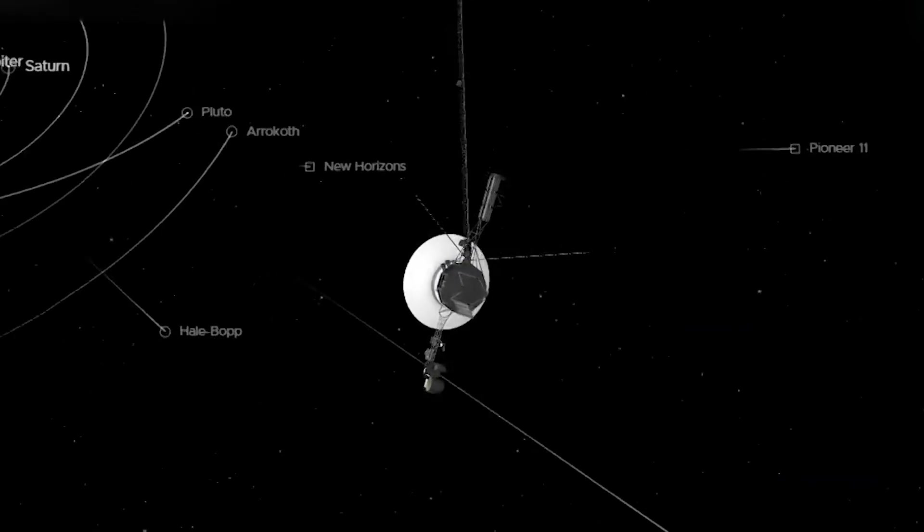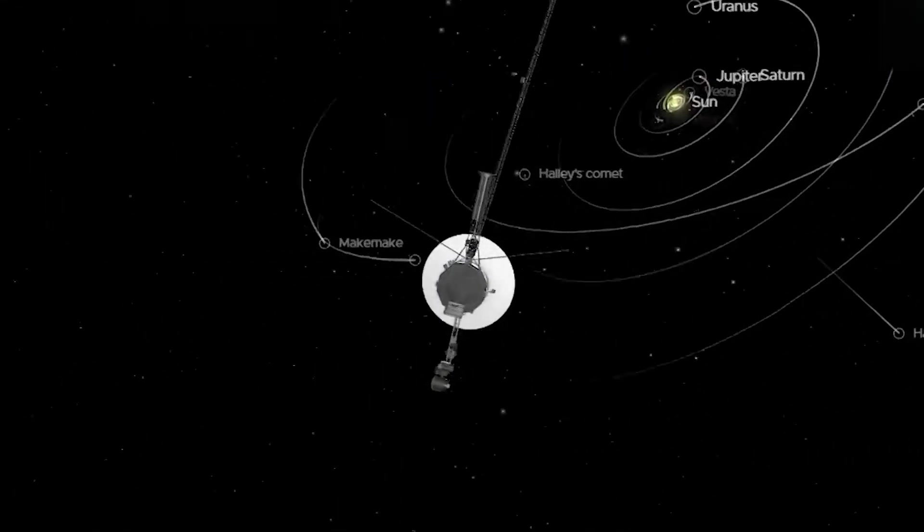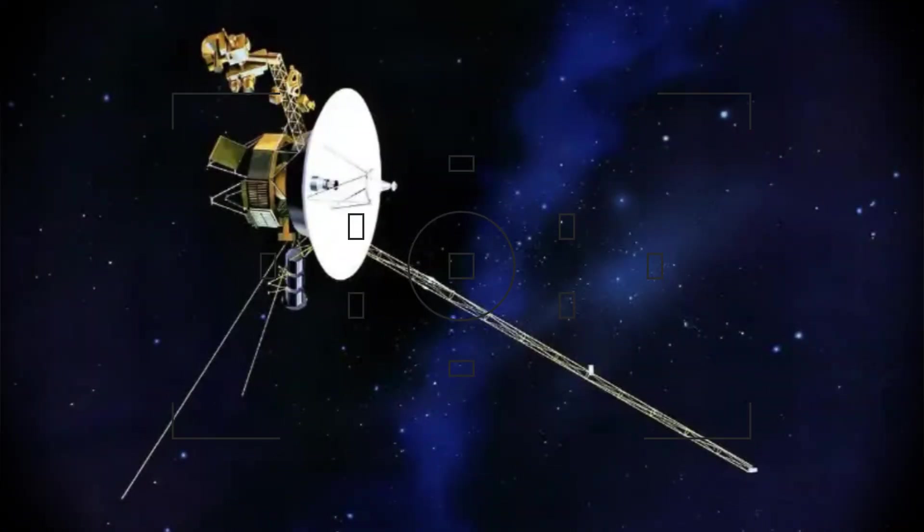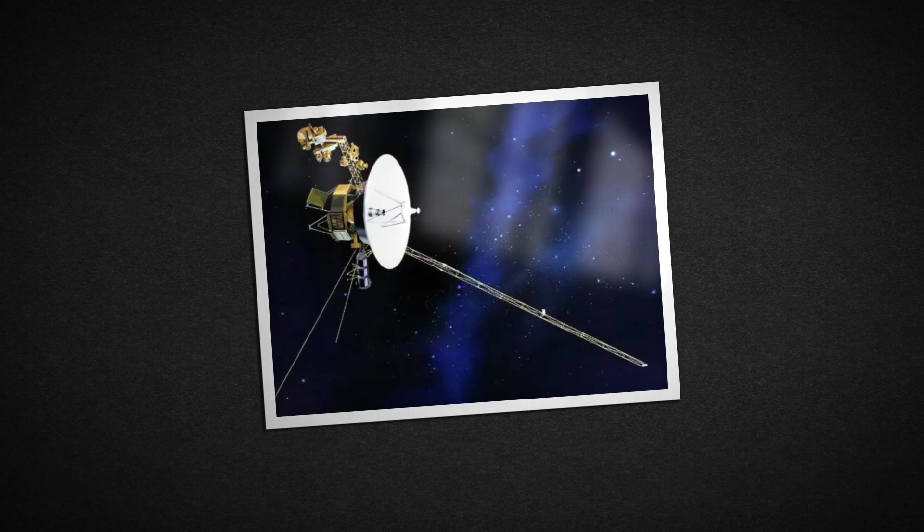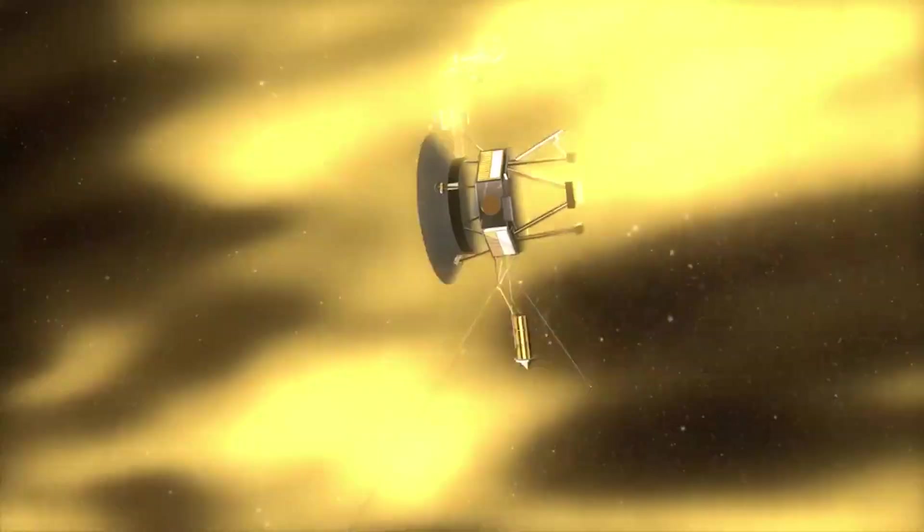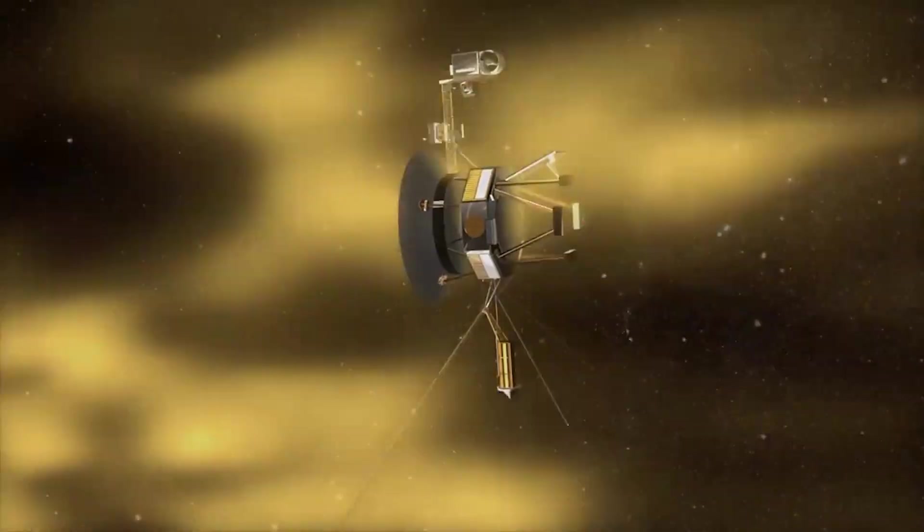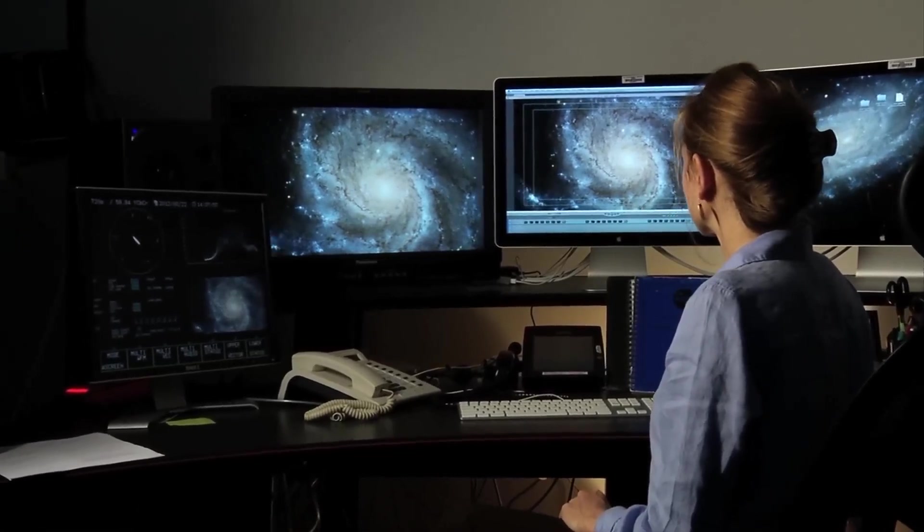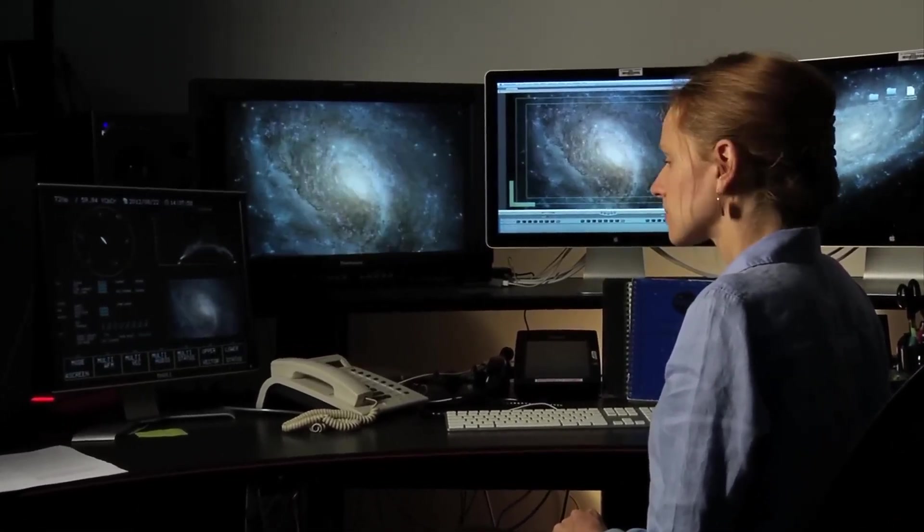As it sails into the cosmic unknown, it carries the legacy of exploration and discovery, a testament to what determination and ingenuity can achieve. As Voyager 2 ventures further, it carries with it a unique perspective on the very edge of our solar system. Its crossing of the Heliopause offers vital data about this mysterious boundary, inviting us to rethink our understanding of the Sun's influence and the vastness beyond.